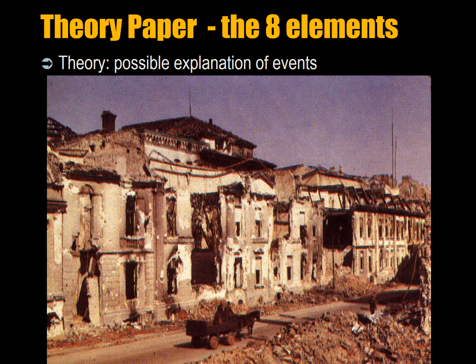The final paper for this course has eight elements, just as any scientific paper or scientific book does. You should eventually internalize and memorize these eight steps, because they will guide all narrative research projects. A theory, which is a possible explanation of events, has eight elements.